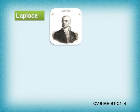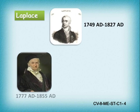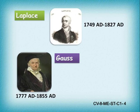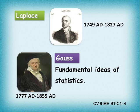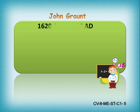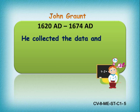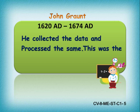Look at these two Western mathematicians, Laplace and Gauss. Laplace lived between 1749 AD to 1827 AD, and Gauss lived between 1777 AD to 1855 AD — they introduced fundamental ideas of statistics. Another Western mathematician, John Grant, who lived between 1620 AD to 1674 AD, collected and processed data. This was the beginning of statistics.